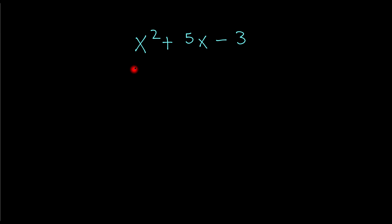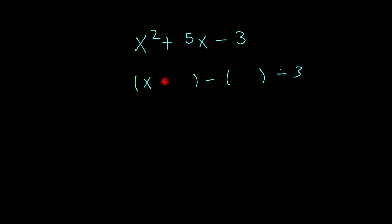Okay guys, let's look at another one. So we've got x squared plus 5x minus 3. Once again, all you do is open your bracket and that would be a minus. Put your x here, bring the sign which is a plus, and take the coefficient in front of the x.